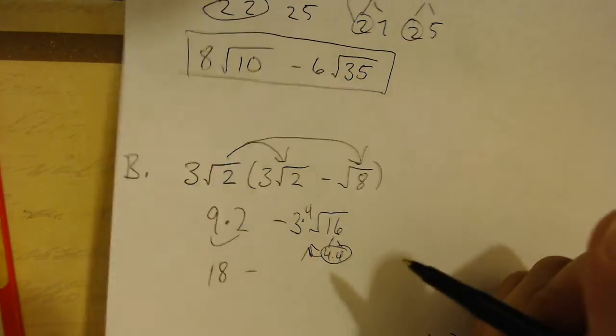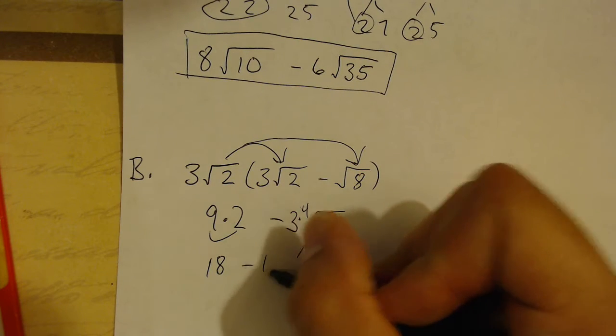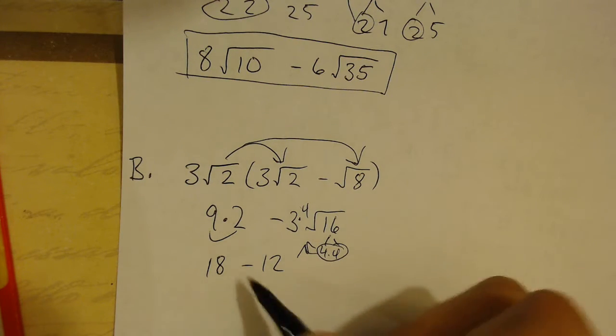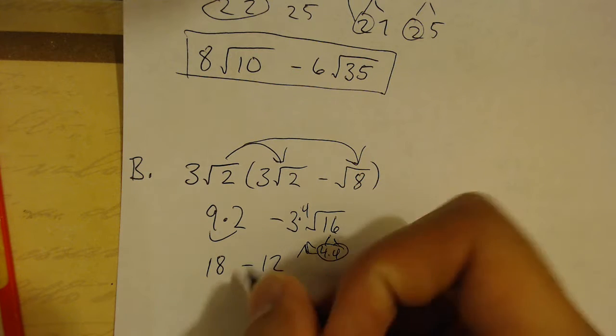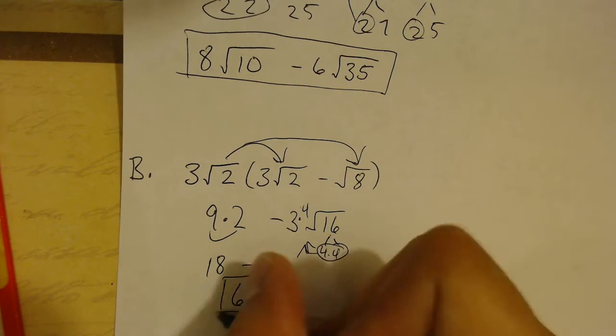Pull that out to become a whole number 4. So, negative 3 times 4 gives me negative 12. And there's nothing left in the radical. So, my problem is now just 18 minus 12, which is 6. So, my answer is 6.